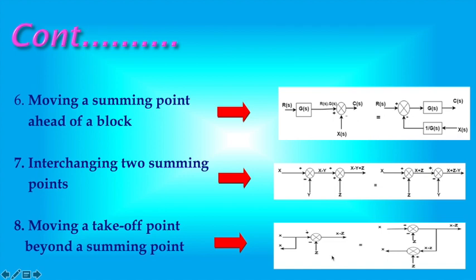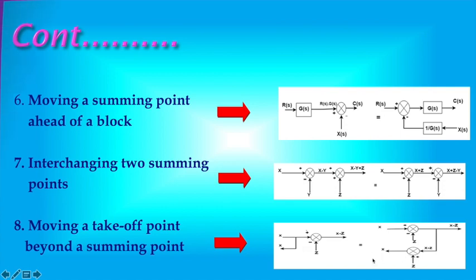Moving a take-off point beyond a summing point: Here the take-off point moves to after the summing point. The signal becomes X minus Z. If another summing point is added and Z is added back, we get X minus Z plus Z, which gives signal X. This signal is always the same as the original X.